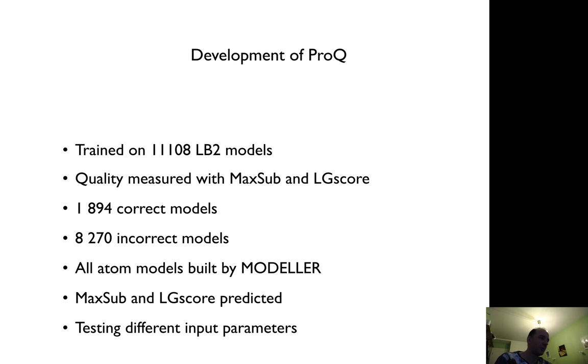We had about 10,000 models, of which about 2,000 were correct and 8,000 were wrong and somewhere in between. We built them all using Modeller because that was the easy way to have the same type of atoms. Later we have been using other methods, and we predicted with some quality measures. It's called MaxSub or LGA score, but these are nowadays standard methods to use.